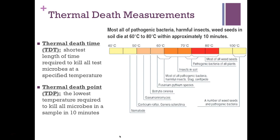We have two thermal death measurements. Thermal death time (TDT) is the shortest length of time required to kill all test microbes at a specified temperature. Thermal death point (TDP) is the lowest temperature needed to kill all microorganisms in a sample in 10 minutes. A chart shows the different temperatures required to kill various types of microorganisms.